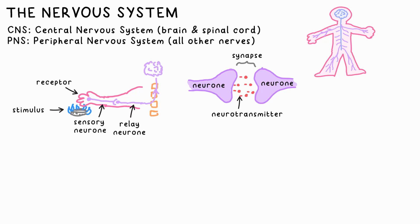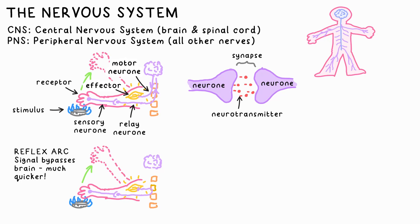Once at the spine, the signal can go to the brain, where you can make the conscious decision to act. The signal then goes back to an effector, like the muscle in your arm, via relay and motor neurons, so that you move your arm. A reflex is when the signal bypasses the brain and goes straight through the spine to the effector — this is a reflex arc.